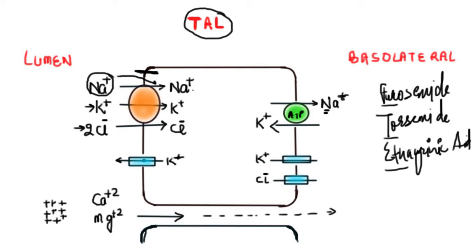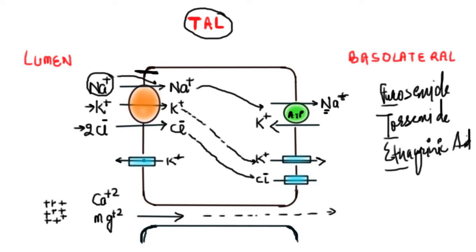The sodium which enters the cell via this pump is then transported to the basolateral side and reabsorbed into the blood. Most of the potassium ions are also transported via a transporter protein to the basolateral side and reabsorbed, while the chloride ions are reabsorbed in the same manner.